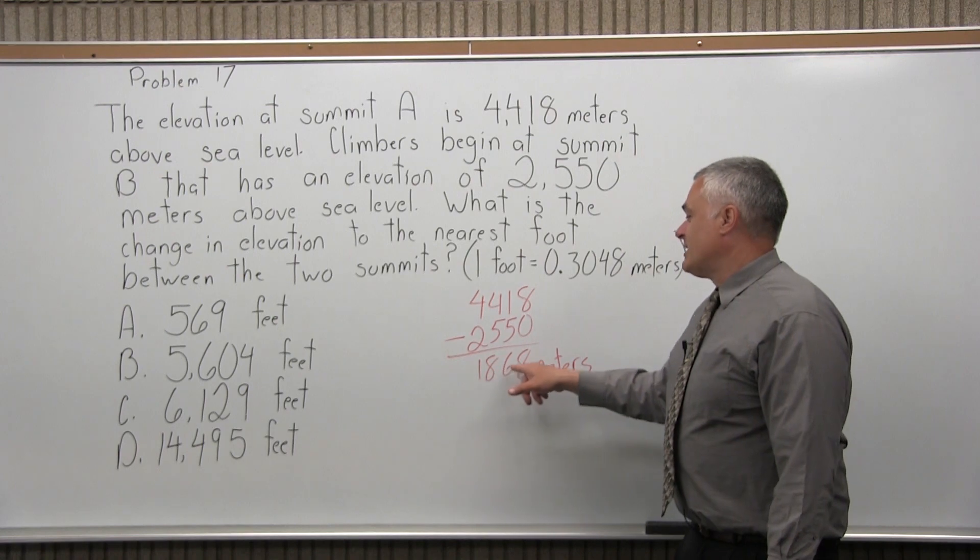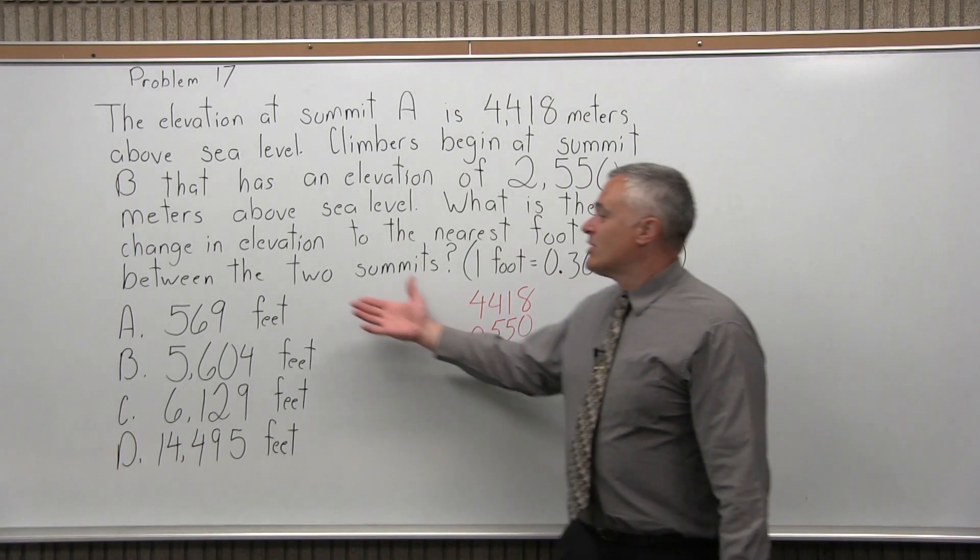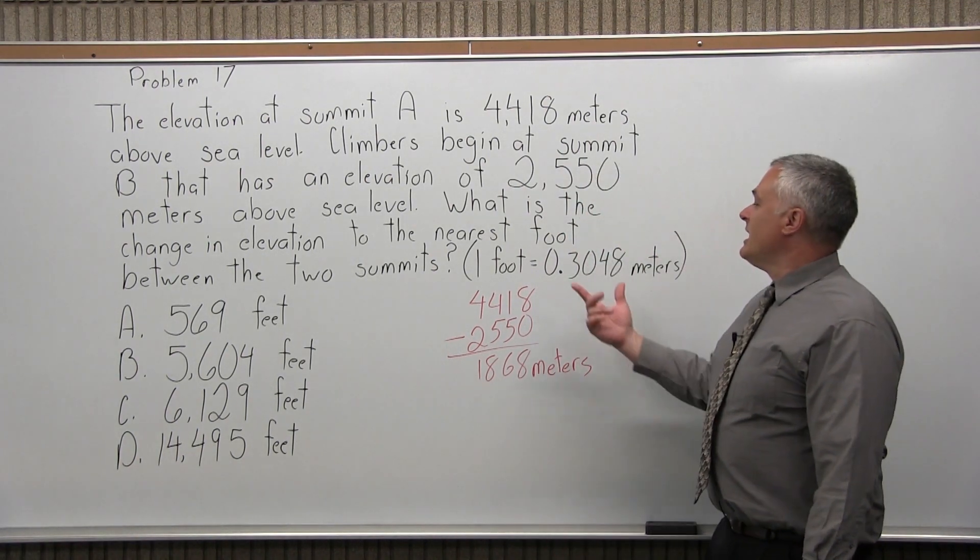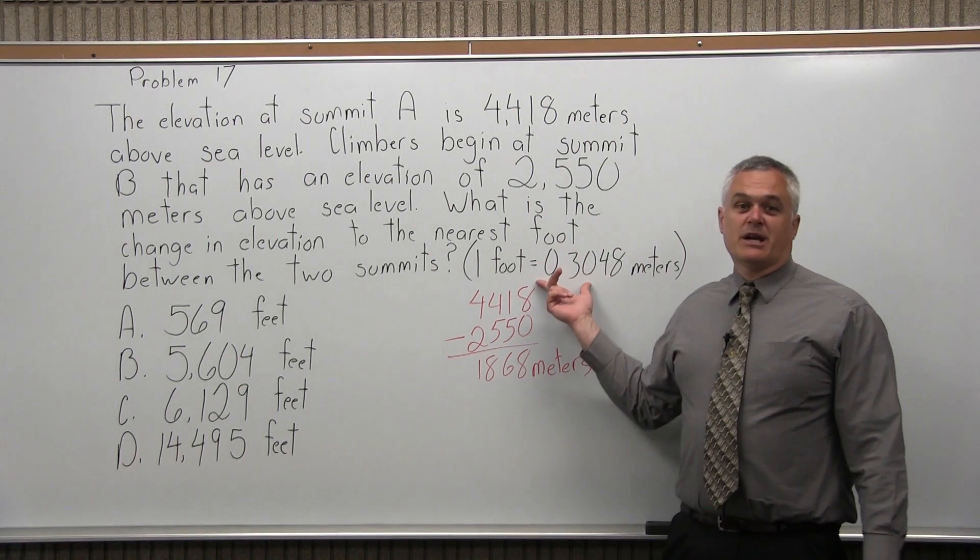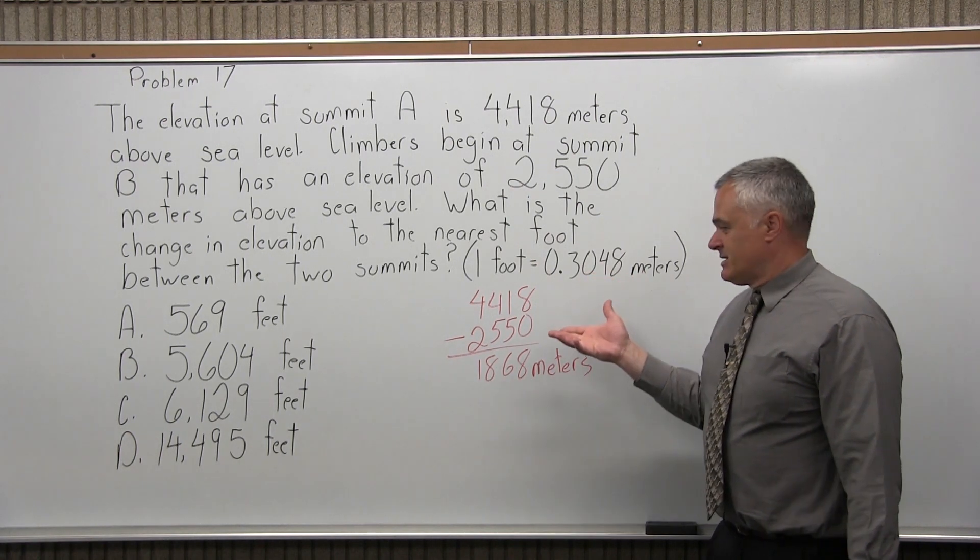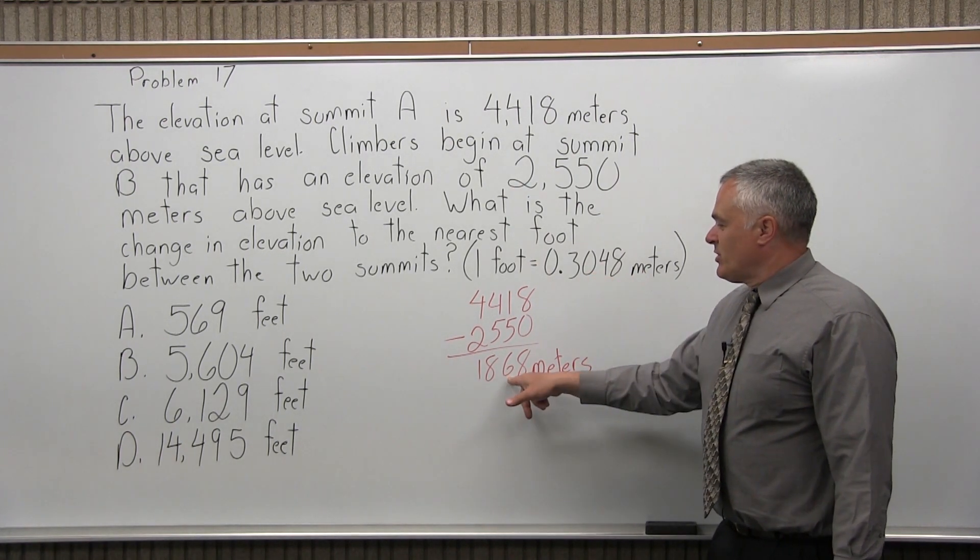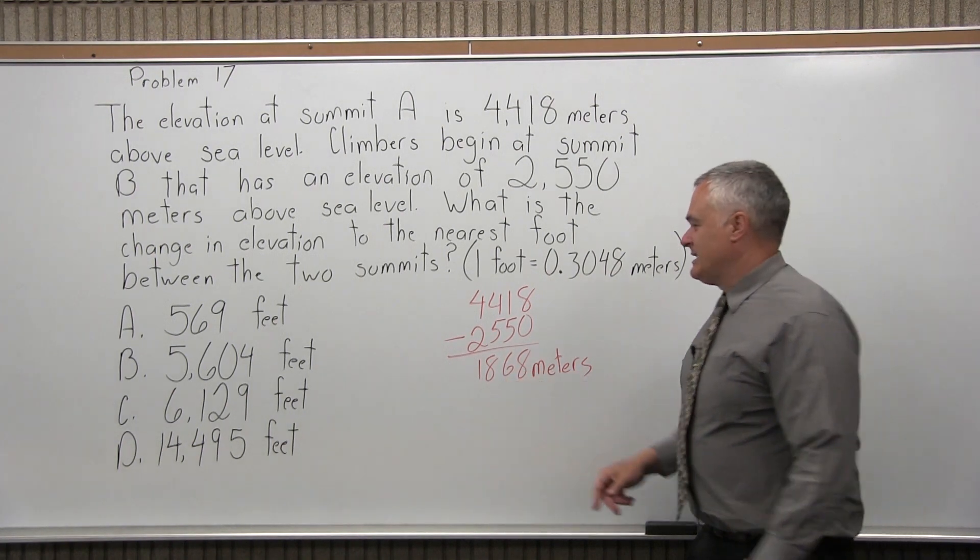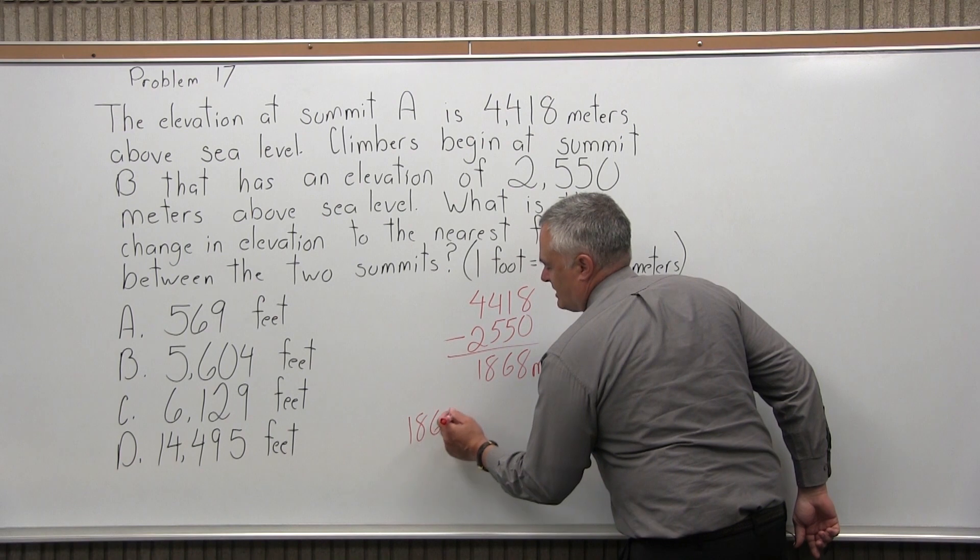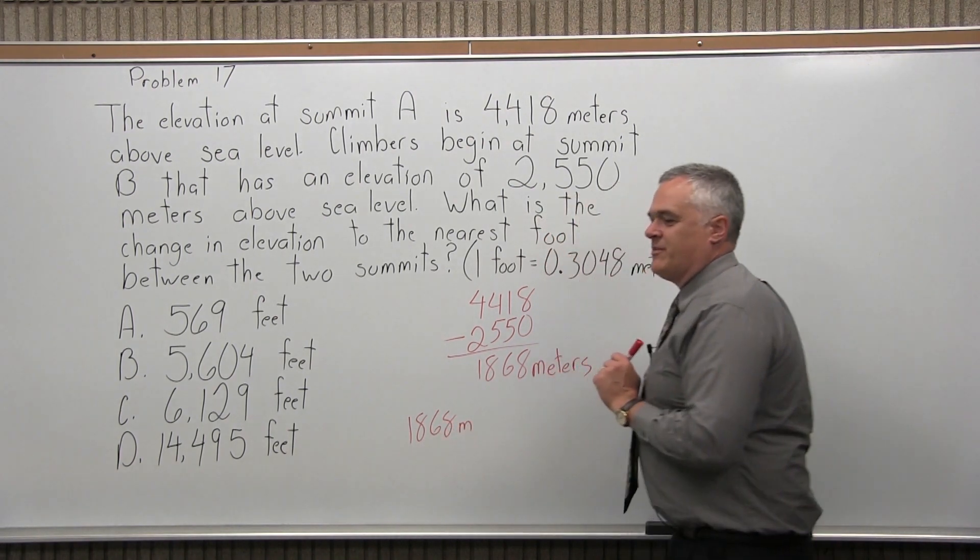So 1,868 meters is equivalent to one of these numbers of feet. So we can do the conversion. And to do that conversion, now we're going to go back to the hint. One foot is equal to 0.3048 meters. So now, what I'm going to do is take my answer of 1,868 and I'm going to change the units.